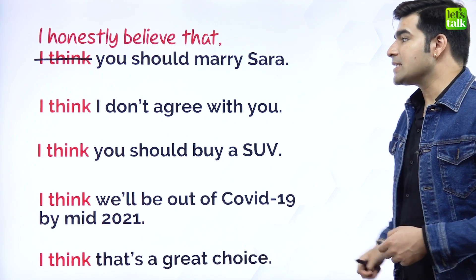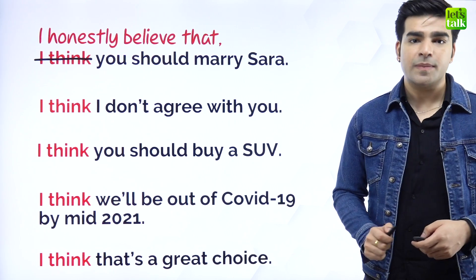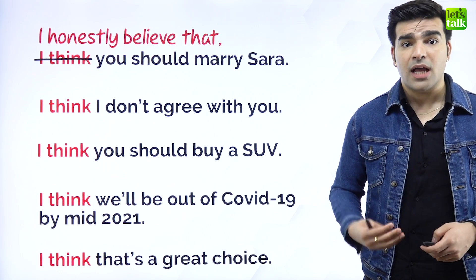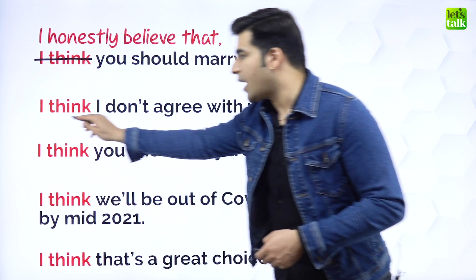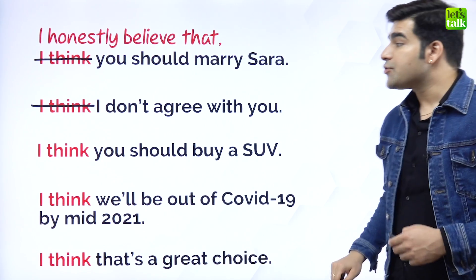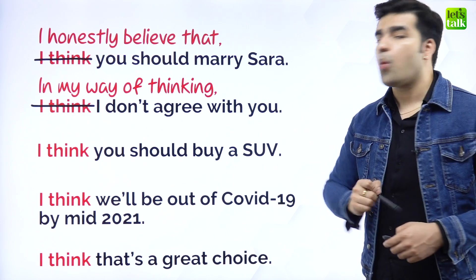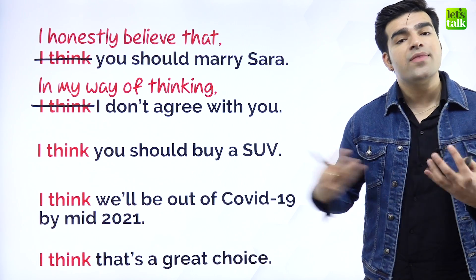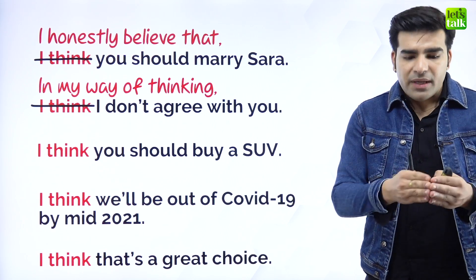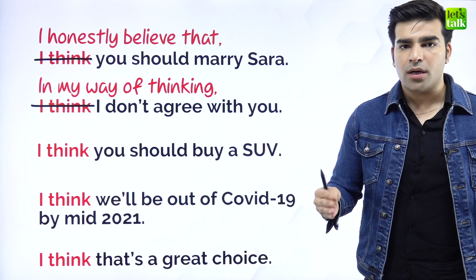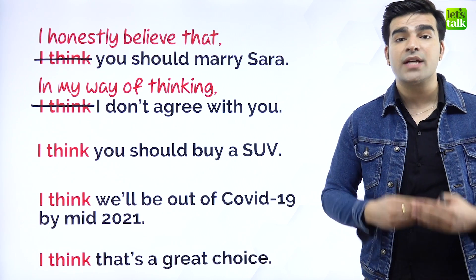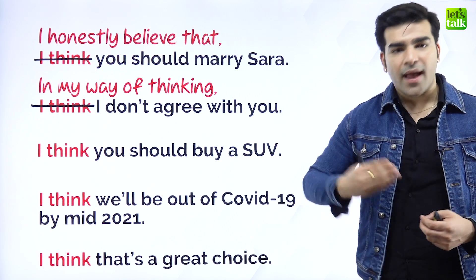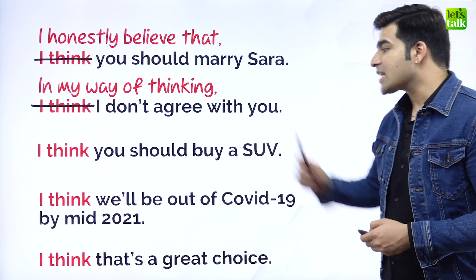The next sentence: 'I think I don't agree with you.' You're expressing disagreement — again, a very blunt expression. 'I think' changes to 'in my way of thinking.' We say 'in my way of thinking' — with that phrasing it becomes slightly longer, but it becomes less rude and less blunt. 'In my way of thinking' and then the rest of the sentence.